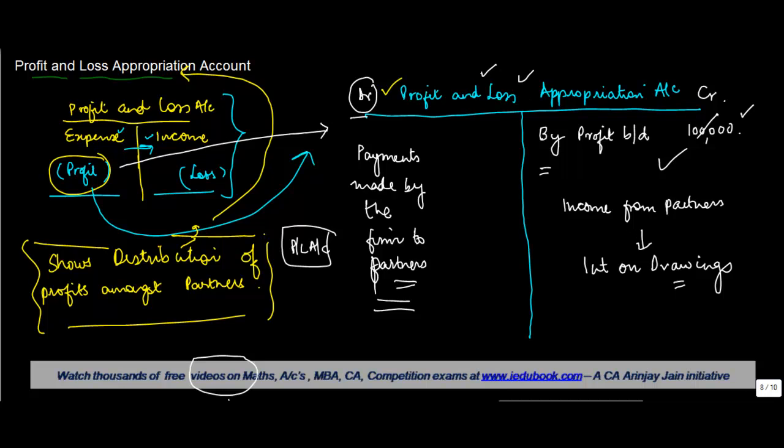Similarly, if instead of a profit you had a loss, this loss is also distributed amongst the partners. When this loss is distributed, you have an entry on the credit side of P&L appropriation account. This is what I wanted to tell you about profit and loss appropriation account. For various kinds of entries, we'll take some more separate videos.